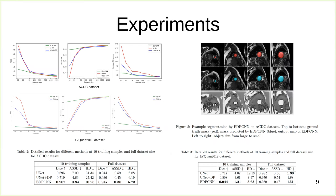For the experimental results, the horizontal axis in the graphs shows dataset size, and the vertical axis shows performance. The results show that EDPCNN outperforms both U-Net and U-Net plus active contour heavily when the training set is very small. This advantage gradually lessens as training set size increases, and when the full dataset is used, all models perform similarly. The fact that EDPCNN significantly outperforms U-Net plus dynamic programming demonstrates the power of end-to-end training.